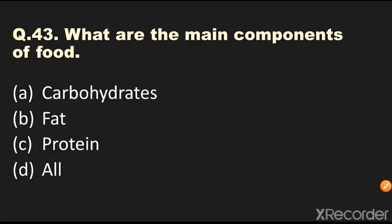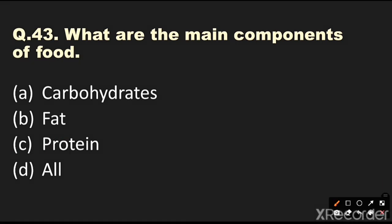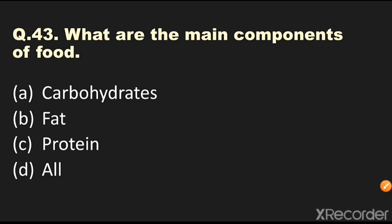Question number 43: What are the main components of food? Options are carbohydrates, fat, protein, or all. The answer is all — carbohydrates, fat, and protein are all three essential components of food.